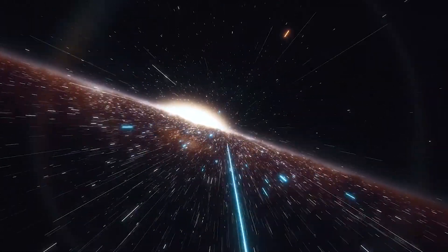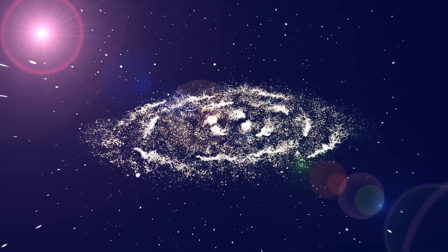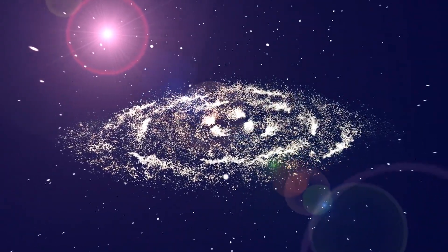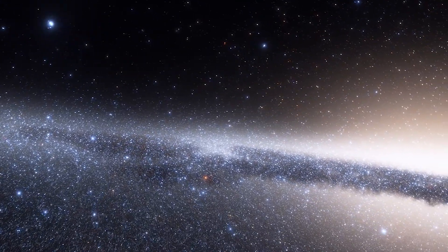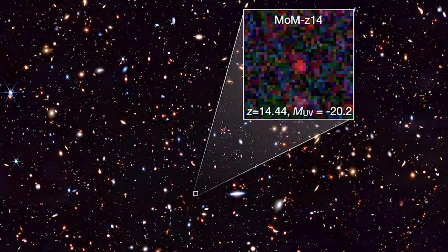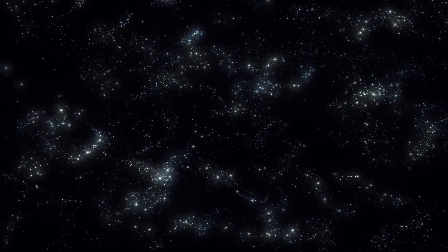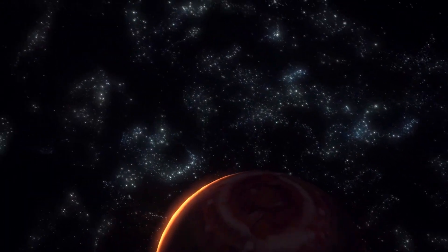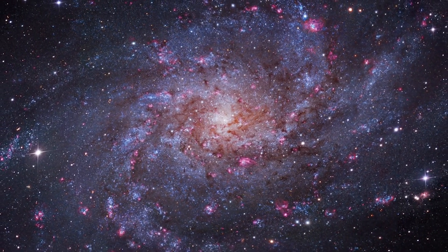Let's break this down. Redshift is a measure of how much the light from a distant object has been stretched as the universe expands. The higher the redshift, the older the light. For comparison, the Milky Way's light, redshift near zero. GNZ 11, 11.1. MONZ 14, 14.44. Every increase in redshift corresponds to an enormous jump backward in time. We're talking about a galaxy from a cosmic era we barely understand.